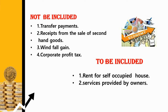The second exclusion is receipts from the sale of second-hand goods — they should not be treated as part of national income because they were already calculated when first established. The third exclusion is windfall gains — a sudden increase in profit or money in the hands of people, like lotteries, should not be included because they do not represent receipts from any current productive activity; they depend on luck. The fourth exclusion is corporate profit tax, which should not be separately included as it is already part of a company's profit.